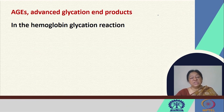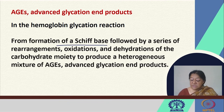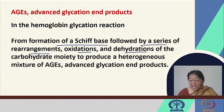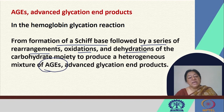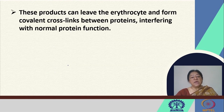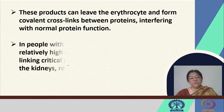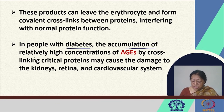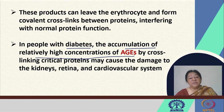In the hemoglobin glycation reaction, formation of the Schiff base is followed by a series of rearrangements, oxidations, and dehydrations that produce a mixture of advanced glycation end products (AGEs), which can be monitored to check the extent of the glycation reaction. These products can leave the erythrocyte and form covalent cross-links between proteins, interfering with normal protein function. In people with diabetes, accumulation of high concentrations of AGEs by cross-linking critical proteins can cause damage to the kidneys, the retina, and the cardiovascular system — such as diabetic retinopathy.